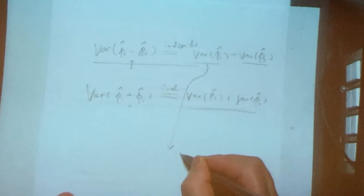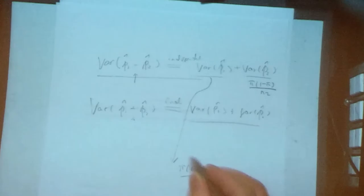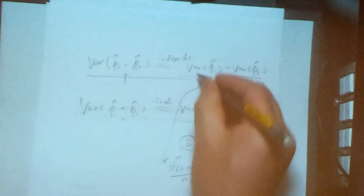So for this one, the variance that we know is pi 1 divided by n1, right? The variance of this one is pi 2 divided by n2. Since we don't know the pi values, we estimate the pi by the common estimate with the P bar.